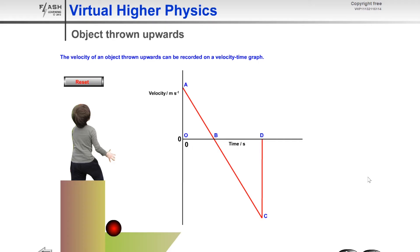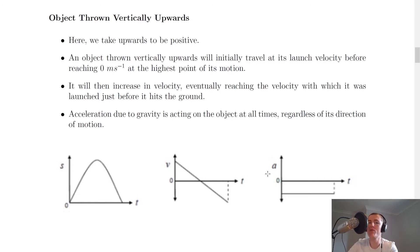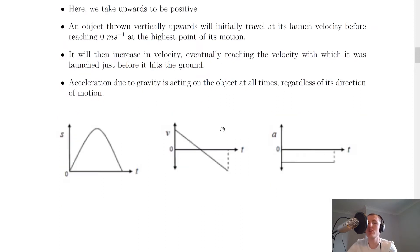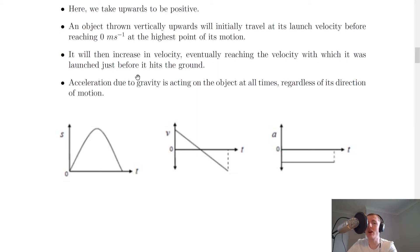Looking in more detail: the object is thrown vertically upwards and initially travels at its launch velocity before reaching zero meters per second at the highest point. On the velocity-time graph, you start at a non-zero positive velocity, slow down to zero, then increase in speed in the negative direction back down to the ground — hitting the ground at the same speed it was launched, but now as a negative value.